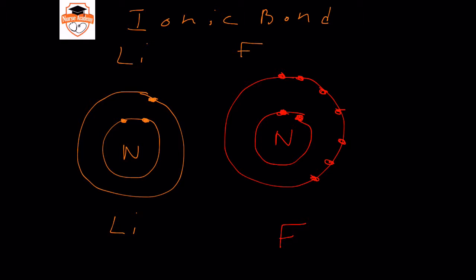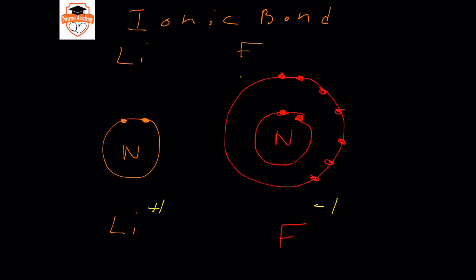Fluorine is one square away from having a complete valence shell on the periodic table. A complete valence shell is eight valence electrons for everything except hydrogen and helium. In order for lithium to form lithium +1 and fluorine to form fluorine −1, one electron from the lithium goes over to the fluorine, so we end up with a lithium +1 ion and a fluorine with eight valence electrons instead of seven.